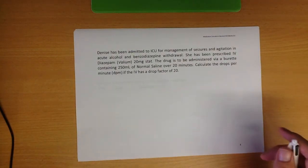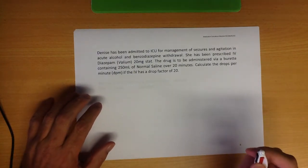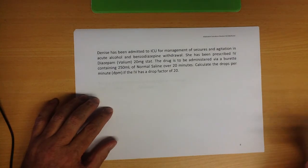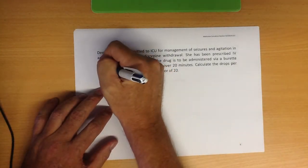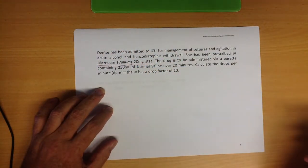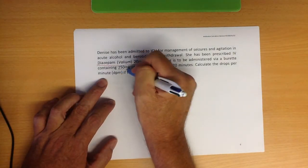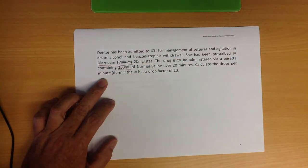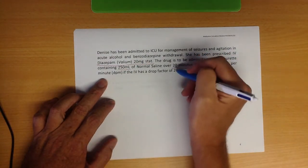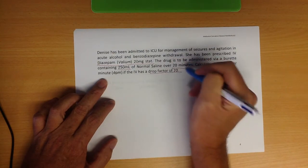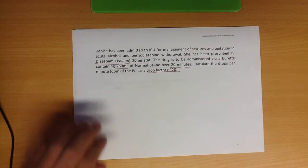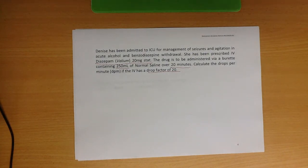Denise was admitted to ICU for management of seizures and agitation in acute alcohol and benzo withdrawal. She's prescribed IV diazepam 20 milligrams stat. The drug is to be administered via burette containing 250 mils of normal saline. It's unusual to see that, most burettes only hold 100 mil, but never mind. It'll be administered over 20 minutes. Calculate the drops per minute if the IV has a drop factor of 20.